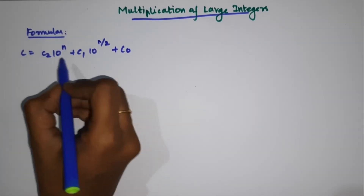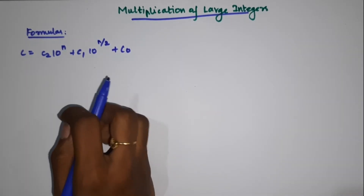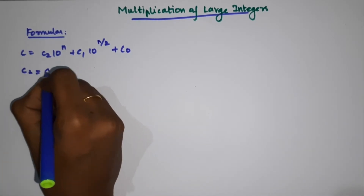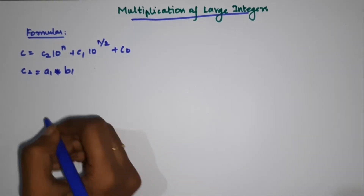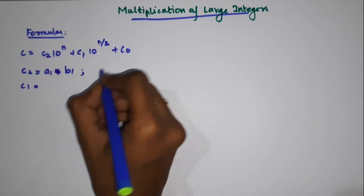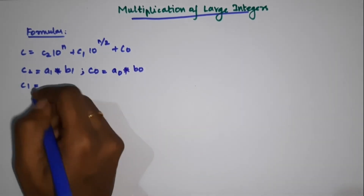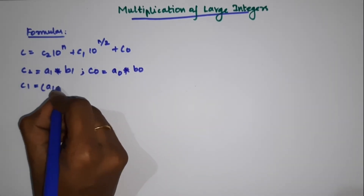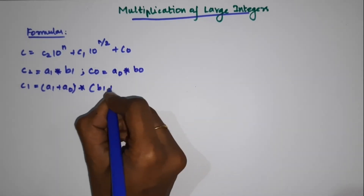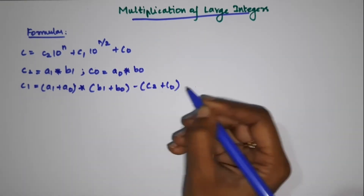We are going to talk about the c2, c1, and c0 values. So what is c2? c2 is equal to a1 star b1. What is c0? c0 is equal to a0 star b0. And c1 is equal to: a1 plus a0, times b1 plus b0, minus c2 plus c0. This is the formula.